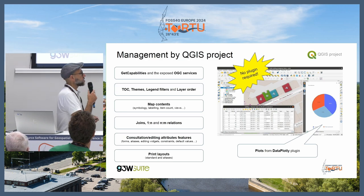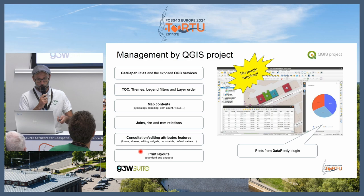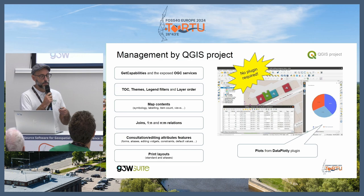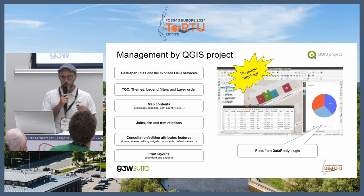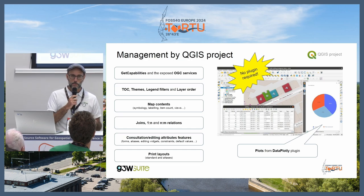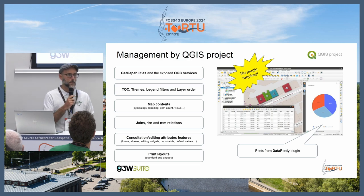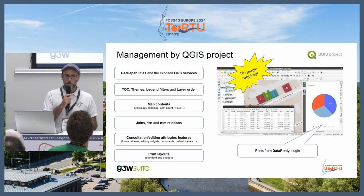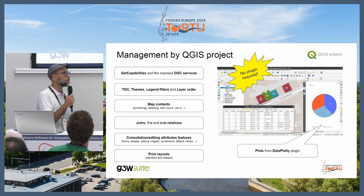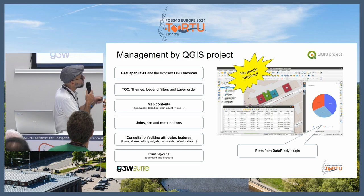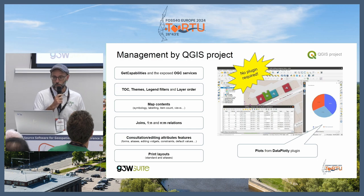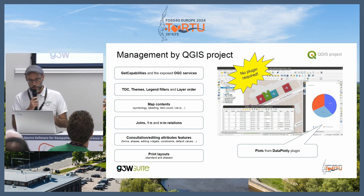GTW Suite also inherits consultation and editing aspects of your QGIS project — the structure of forms you create in QGIS Desktop, aliases, editing widgets, constraints, default values, etc. It also inherits the print layout, the simple print layout, and the Atlas. Thanks to integration with the DataPlotly plugin, you can take charts and plots you create in QGIS Desktop and make them available in your WebGIS services.